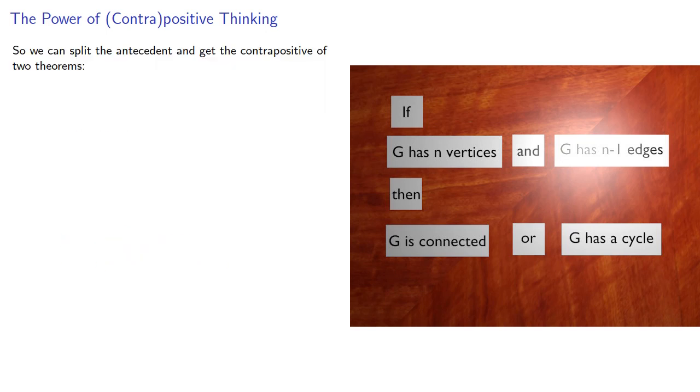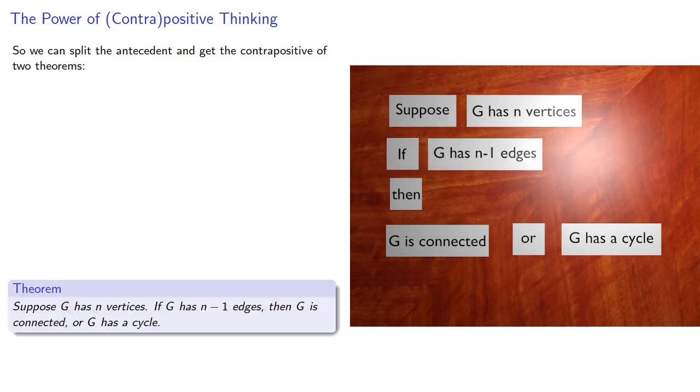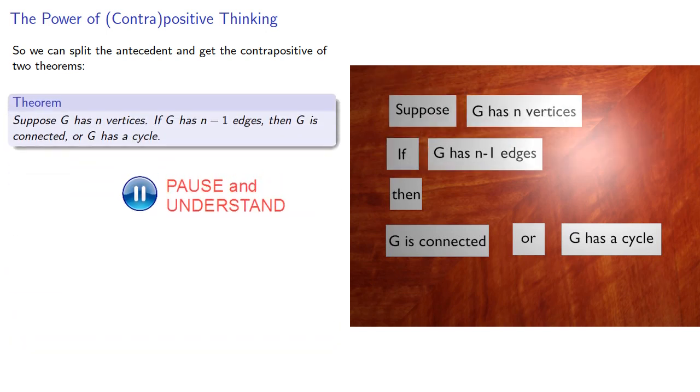Since our antecedent is a conjunction, we can split it and get the contrapositive of two theorems. First, we can make G has n vertices a main premise, or we could make G has n-1 edges our main premise.